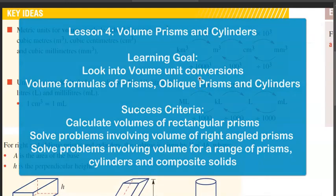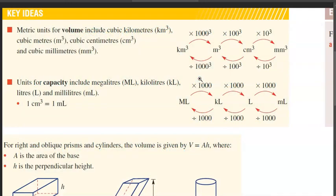Before we look into the different examples, we want to make sure that we're pretty confident when it comes to conversion of metric volume measurements. In other words, we should be able to convert millimeters cubed to centimeters cubed to meters cubed to kilometers cubed and vice versa using the flow chart here. So if I want to convert centimeters cubed to meters cubed, I would have to divide this by 100 to the power of three.